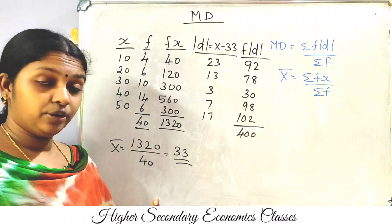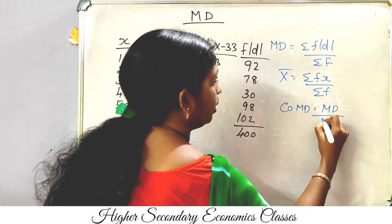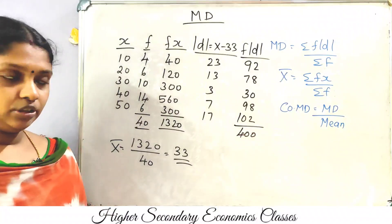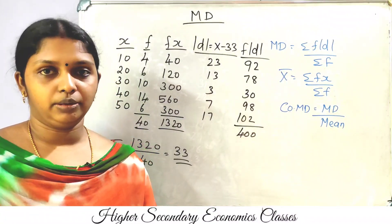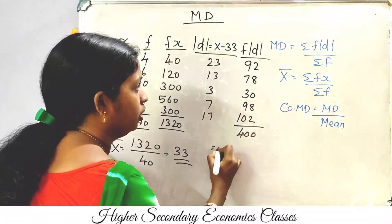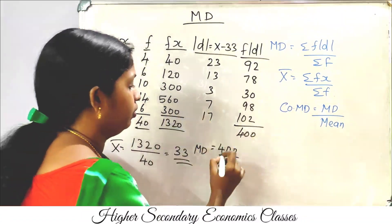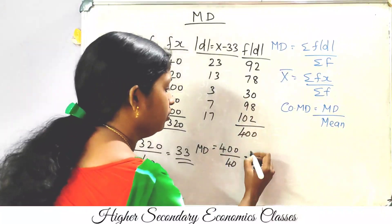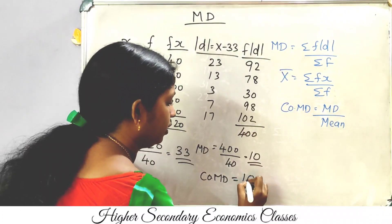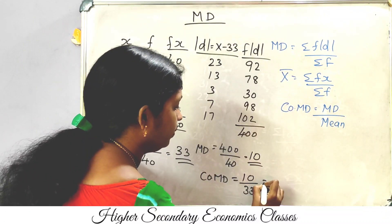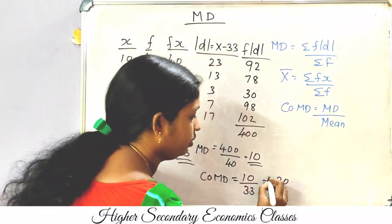Mean deviation equals sigma f modulus d divided by sigma f, which is 400 divided by 40, equal to 10. If we are asked for the coefficient of mean deviation, it equals mean deviation divided by mean. So coefficient of mean deviation equals 10 divided by 33, which is approximately 0.30.